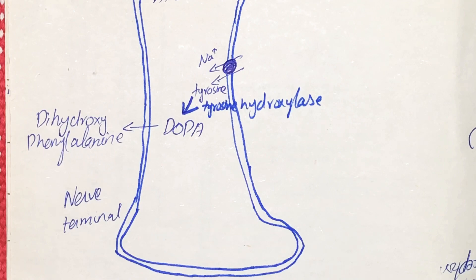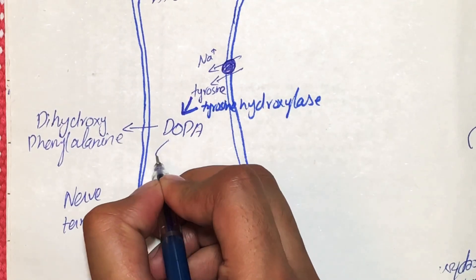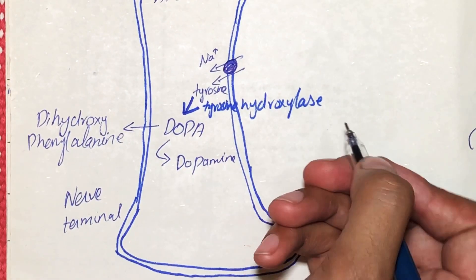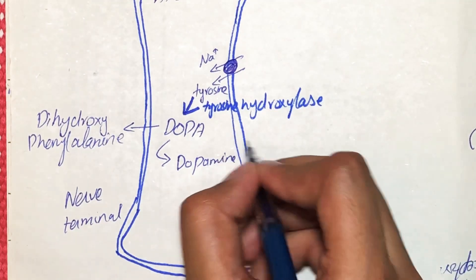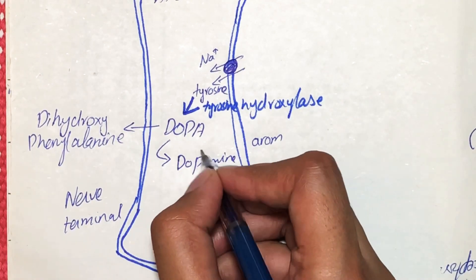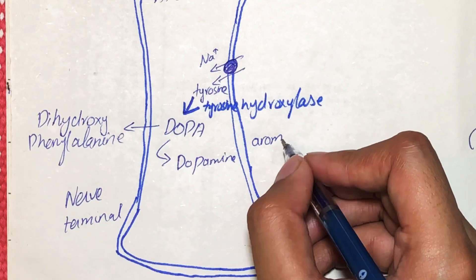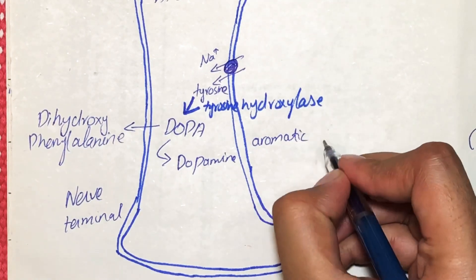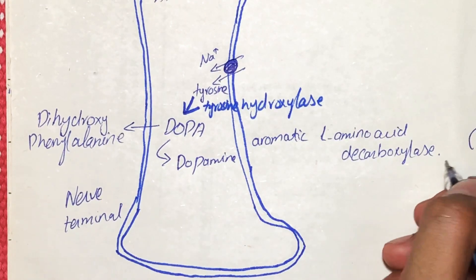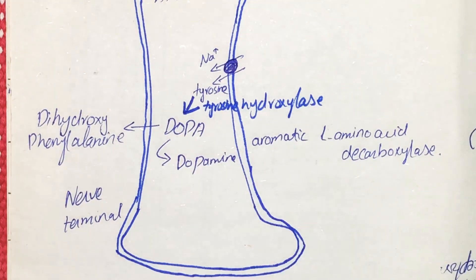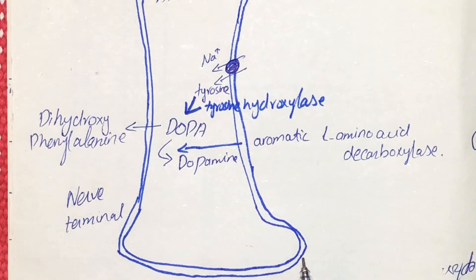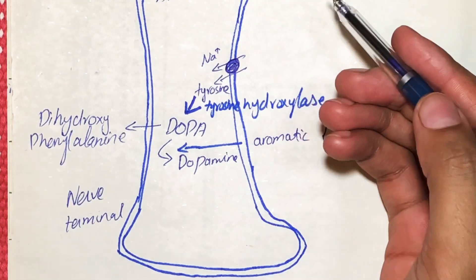After the formation of DOPA in the cytoplasm, it is then converted into dopamine by the action of an enzyme called aromatic L-amino acid decarboxylase. This enzyme acts in the cytoplasm and causes the formation of dopamine from DOPA. All of this is happening in the pre-synaptic neuron.